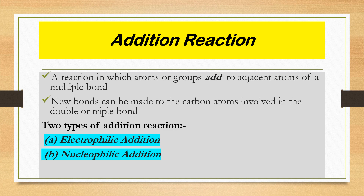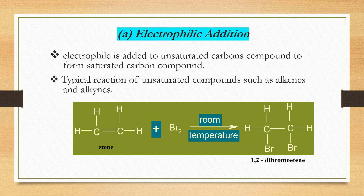In addition reactions, atoms or groups of atoms are added to adjacent atoms of a multiple bond. New bonds are made through the carbon atoms involved in the double or triple bond. For electrophilic addition, it occurs when an electrophile is added to an unsaturated carbon compound to form a saturated one — from unsaturated to saturated. Electrophilic addition is the typical reaction of alkenes and alkynes.